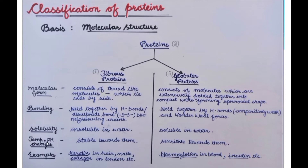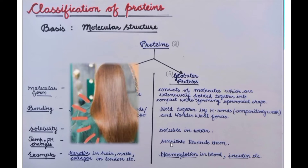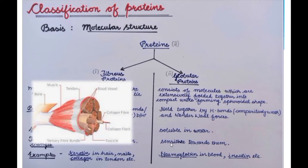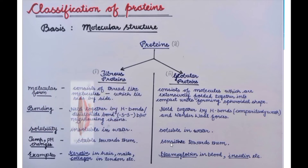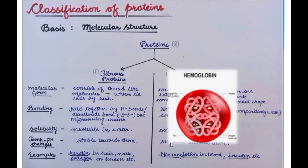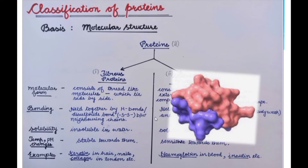If the temperature or pH changes, do these proteins undergo some effect? Fibrous proteins are stable towards these changes, while globular proteins are sensitive towards changes in temperature or pH. Examples of fibrous proteins include collagen, which is found in our tendons. Examples of globular proteins include hemoglobin — polypeptide chains are extensively folded and hemoglobin in our blood is a globular protein — and insulin, which is also a type of globular protein.